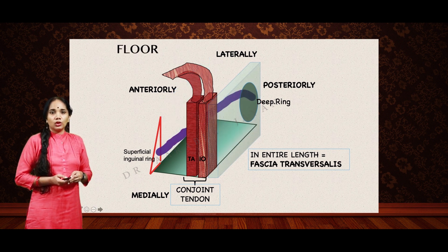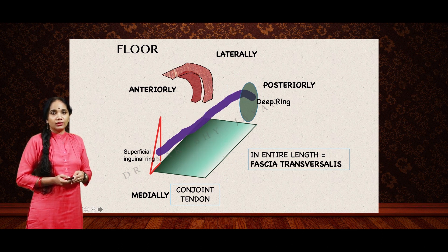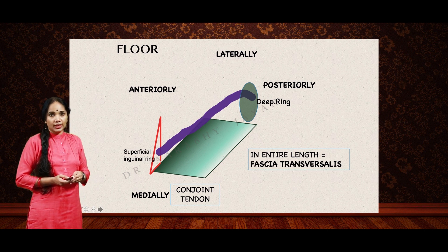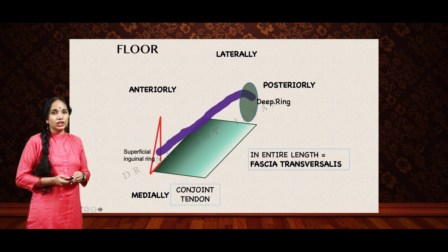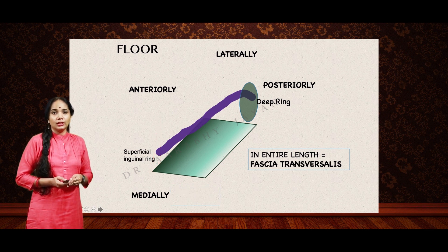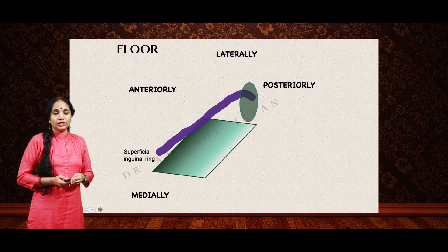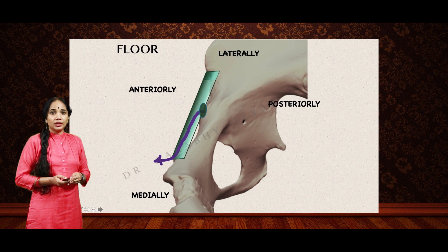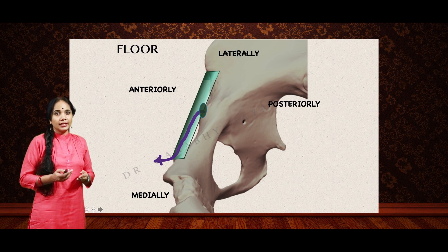Now let us remove all these walls to clearly see the conjoint tendon and the floor. The floor is mainly formed by the inguinal ligament, with a slight reinforcement. To understand the orientation, let us place this in a real pelvis. Changing the orientation slightly, that is how the inguinal ligament is oriented in a pelvis.